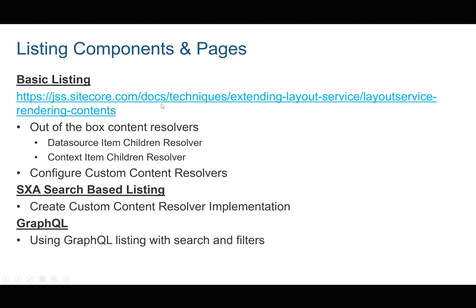The basic listing and custom content resolvers that come out of the box only support queries — they do not support search-based queries or all these different query variations, and they do not support sorting. So with the custom content resolver type, you're only good if you're creating a list with maybe a maximum number, like the top five — meaning the first five in the list rather than with a specific sort order.